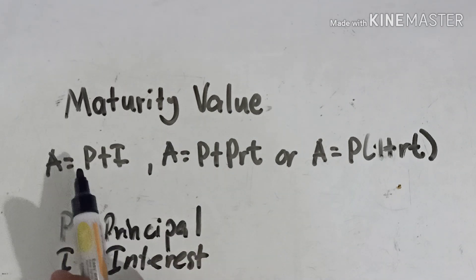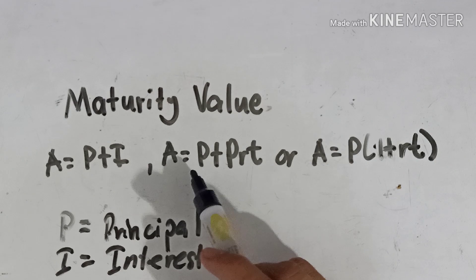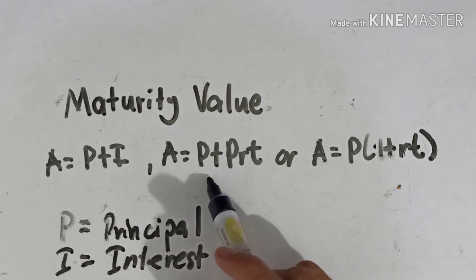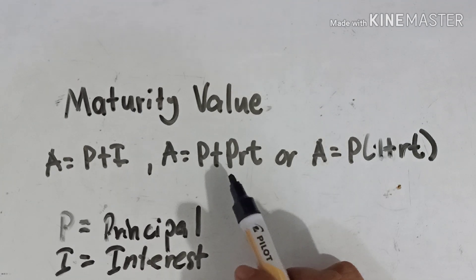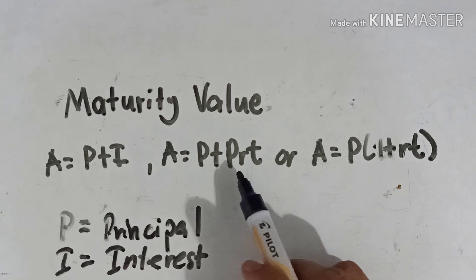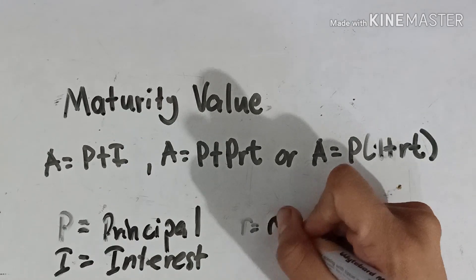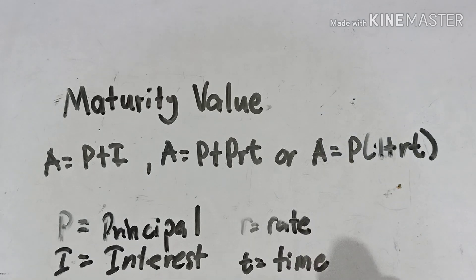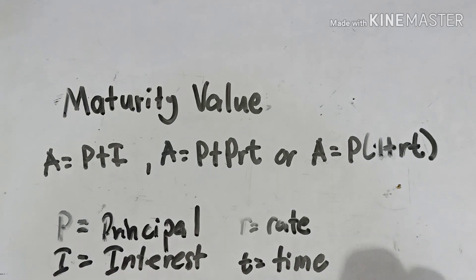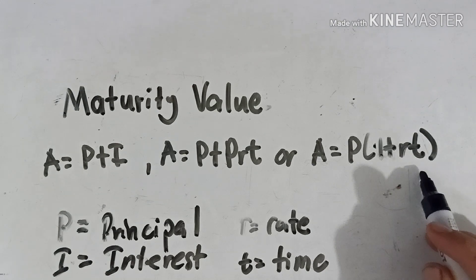We're going to use the formula A = P + I when there is a given value for P and the interest. Another formula is A = P + Prt, which we use if there is no given value for interest but there is a given value for r and t, where r stands for the rate and t stands for the time. A third formula is A = P times (1 + rt), which can also be used when there is no given value for the interest.